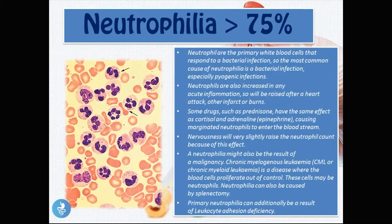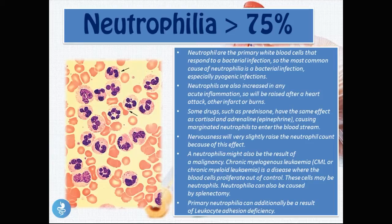A high number of neutrophils — over 75 percent — is called neutrophilia. This occurs most commonly with bacterial infection, since neutrophils are responsible for destroying bacteria. Neutrophilia can also occur with any acute inflammation — after a heart attack, burns, or trauma. Drugs such as prednisone can cause marginated neutrophils to enter the bloodstream. Neutrophilia can also result from malignancies such as chronic myelogenous leukemia (CML), splenectomy, or leukocyte adhesion deficiency.